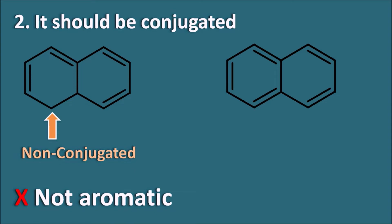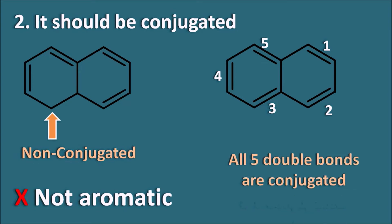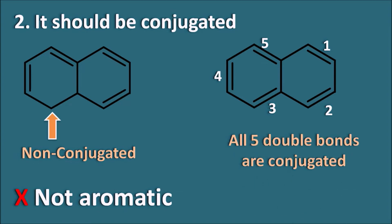In the second structure, we can observe different types of double bonds — 1, 2, 3, 4, and 5. All five double bonds are arranged alternately with single bonds, so all five double bonds are conjugated. This structure is therefore aromatic in nature. This is a simple naphthalene structure, which is again aromatic.